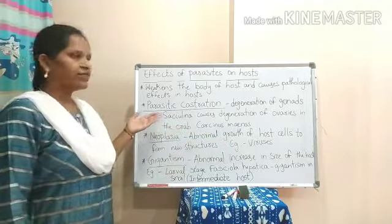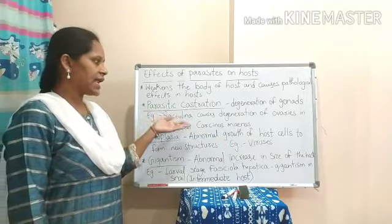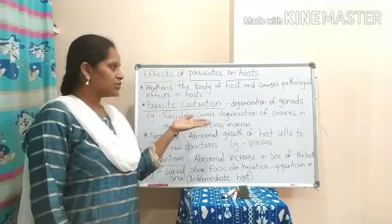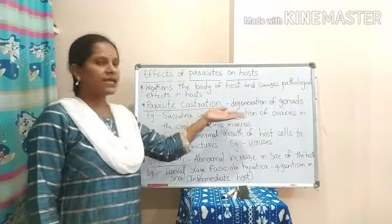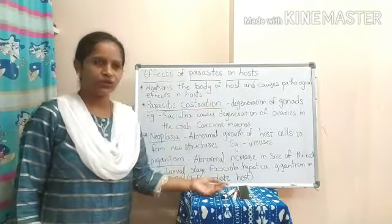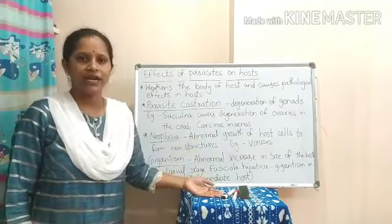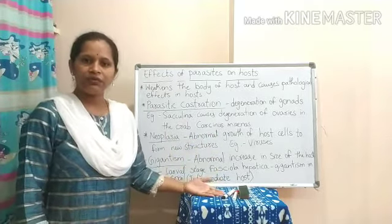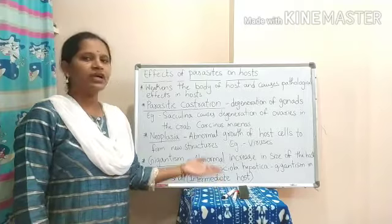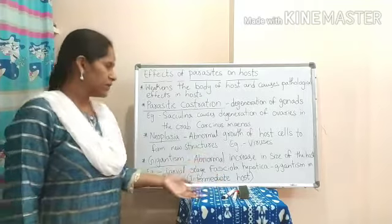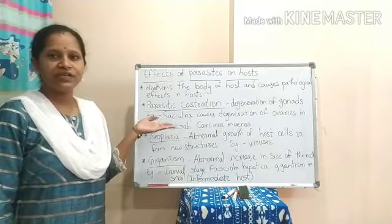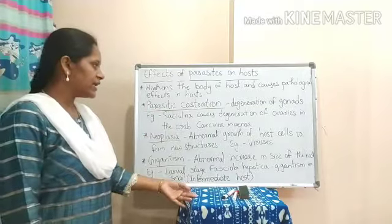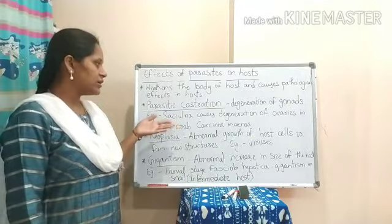Here we have parasitic castration. In this castration, we can see the degeneration of gonads. If the gonads are degenerated, the host will become sterile and will lose the capability of reproduction. An example of parasitic castration is Sacculina, which is a crustacean.